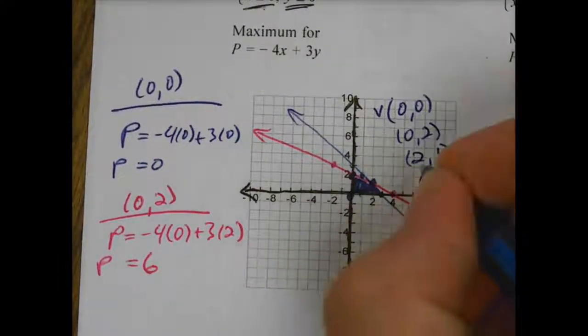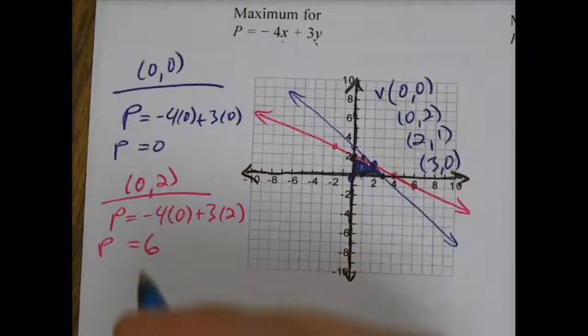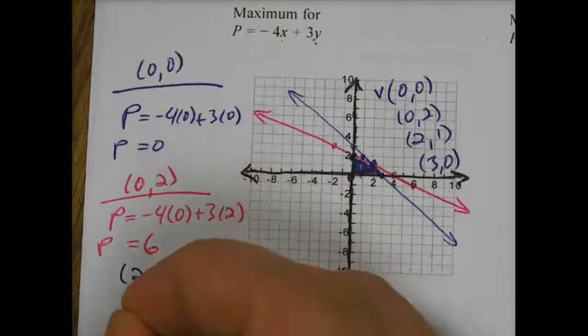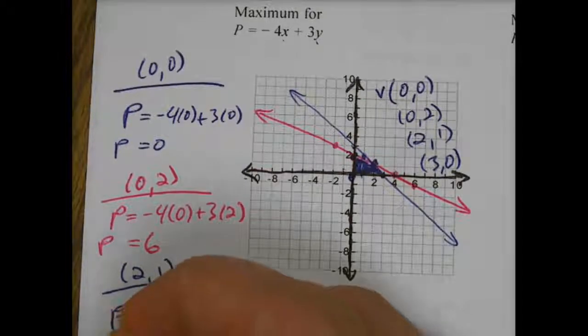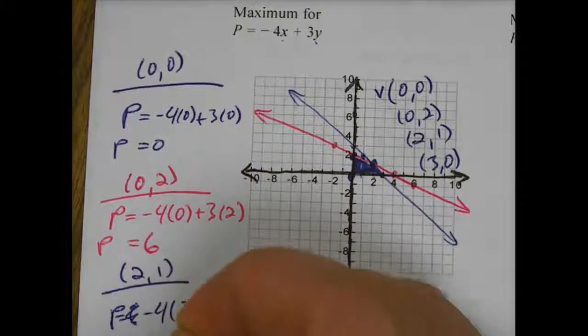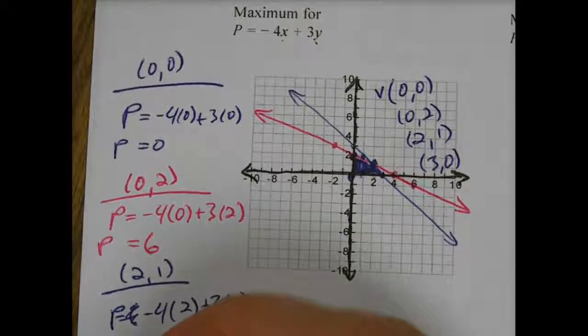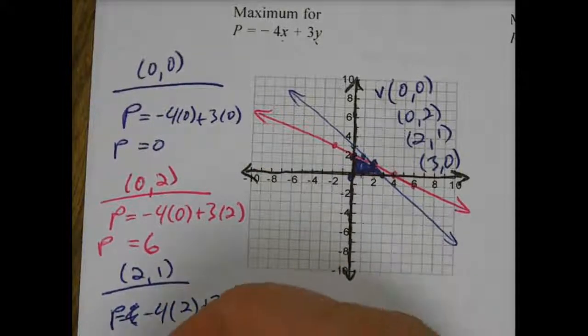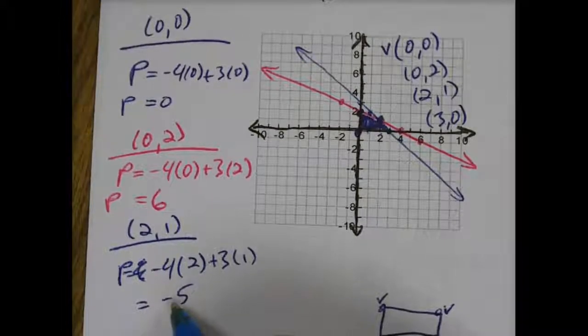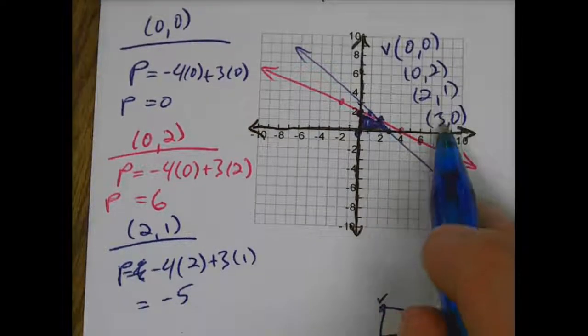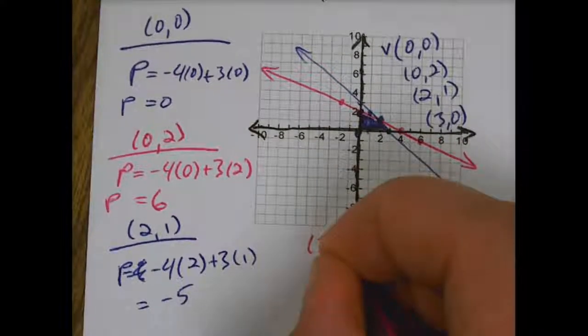So we'll check 2, 1 as well. So again, I'm just plugging numbers into my objective function for x and y for those two spots. So if I check 2, 1, P would be negative 4 times 2 plus 3 times 1, so this would be negative 8 plus 3 is negative 5. So that's actually a really low value, so I don't want that. That's definitely the lowest of the things I've done so far. Now we also have 3, 0, so that'll be my last vertices to check.